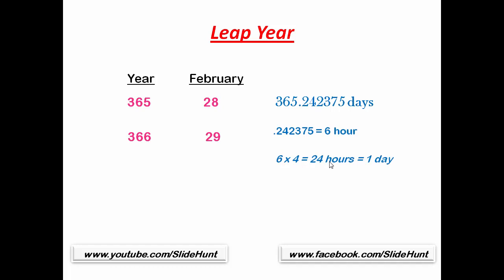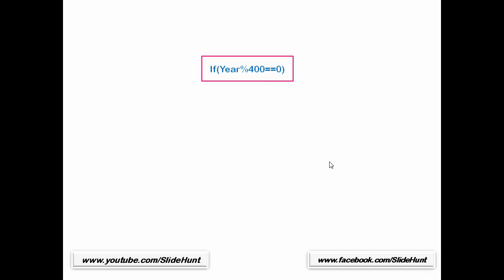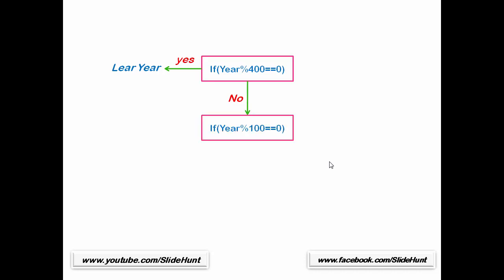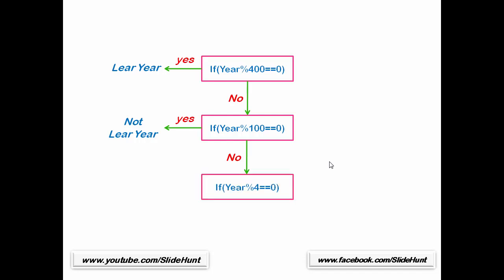Now we learn how to check if a year is a leap year or not. To understand it easily, I am going to draw a flowchart. First, we check if the year is completely divisible by 400 or not. A number is completely divisible when we get remainder 0, so we write the condition as: if year modulo 400 == 0. If the year is divisible by 400, then the year is a leap year. If not, we check if it is completely divisible by 100. If divisible by 100, then the year is not a leap year. Otherwise, we check if the year is divisible by 4. If divisible by 4, then it is a leap year; otherwise it is not.